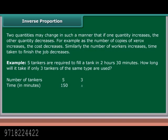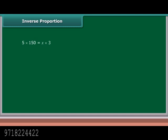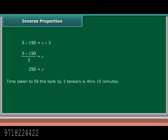Example: Five tankers are required to fill a tank in 2 hours 30 minutes. How long will it take if only three tankers of the same type are used? Fewer tankers means more time required — so this is an inverse proportion. 5 × 150 = X × 3, therefore X = (5 × 150)/3 = 250 minutes. Time taken to fill the tank by three tankers is 4 hours 10 minutes.